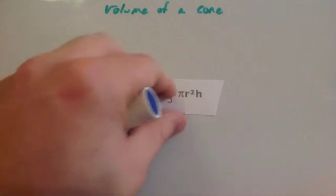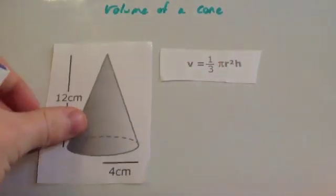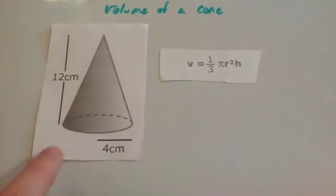Let's have a look at an example. We've got a cone here. It has got a radius across the bottom, across the base of it, of 4 centimetres. So the circle on the base has got a radius of 4 centimetres. And the height of the cone is 12 centimetres. And you've been asked to calculate the volume of this cone.